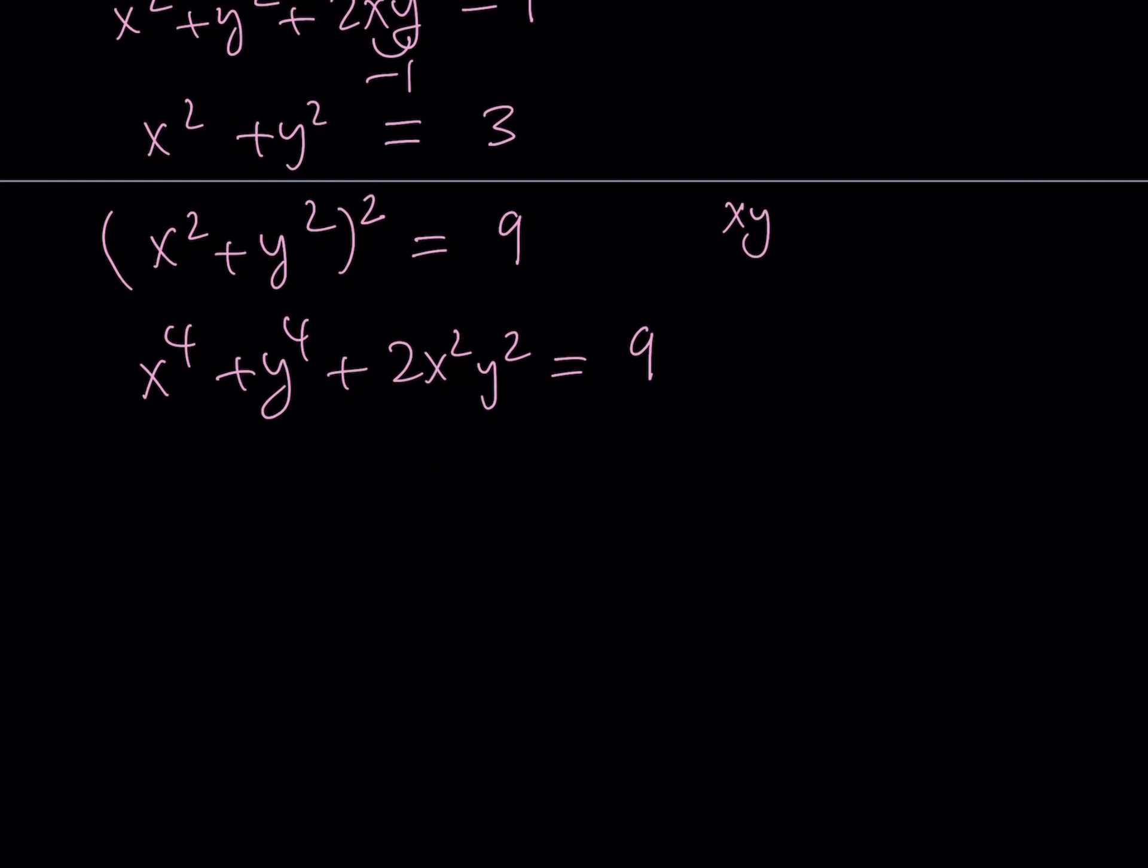We know that xy is equal to negative 1, remember? So, x squared y squared is just negative 1 squared, which is positive 1. Multiply that by 2. That's going to give you a 2. So, if you subtract 2 from both sides, you're going to get x to the 4th power plus y to the 4th power is equal to 9 minus 2, which is 7.